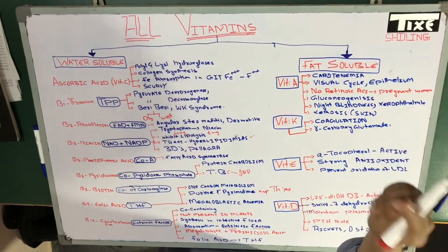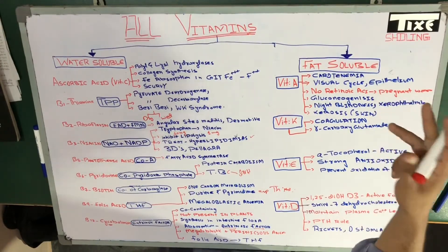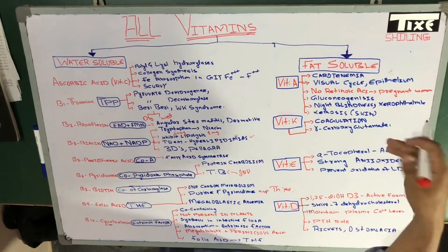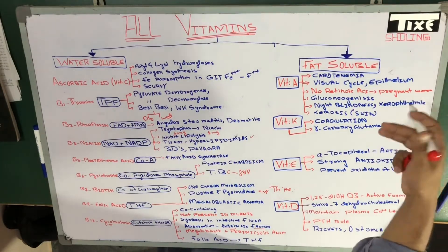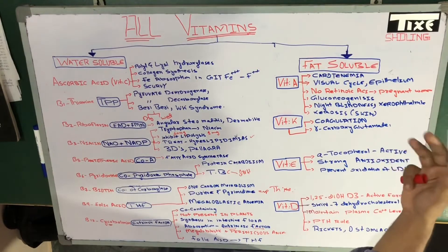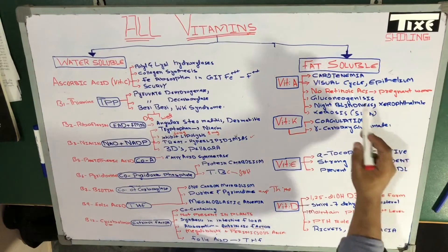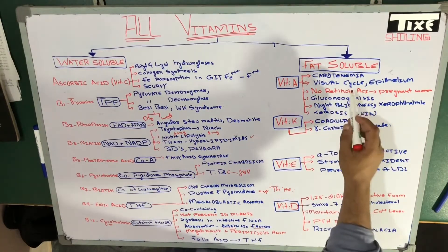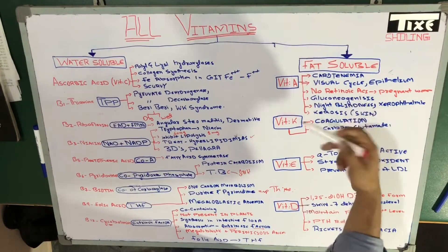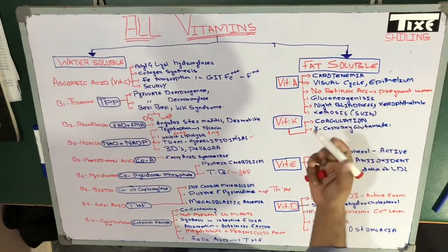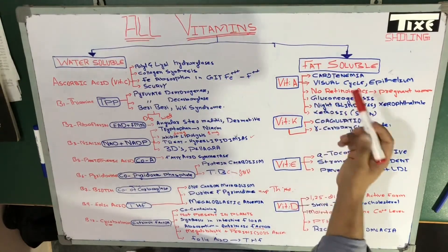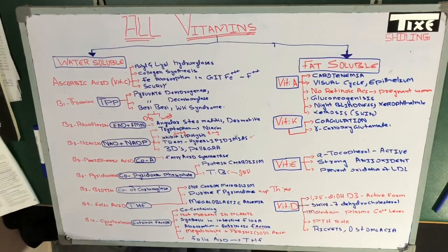Since thyroxin is required for the conversion of carotenes to vitamin A, the active form, in thyroxin deficiency — if you have hypothyroidism — carotenes accumulate in your blood, resulting in a condition known as carotenemia. Carotenemia means the blood level of carotene increases because it is not going to be converted into the active form. That condition is called carotenemia.